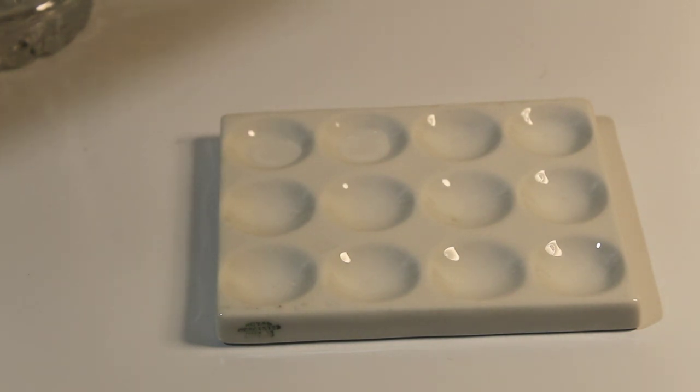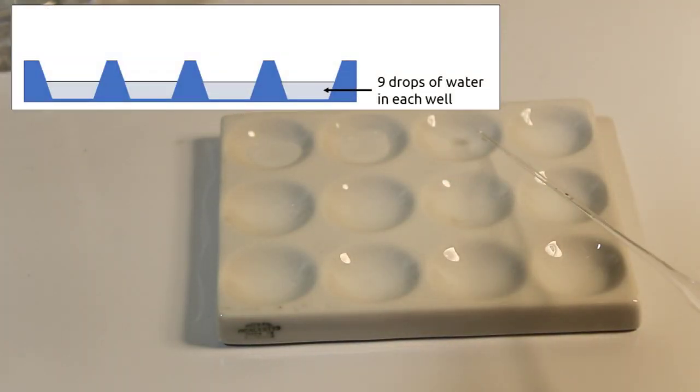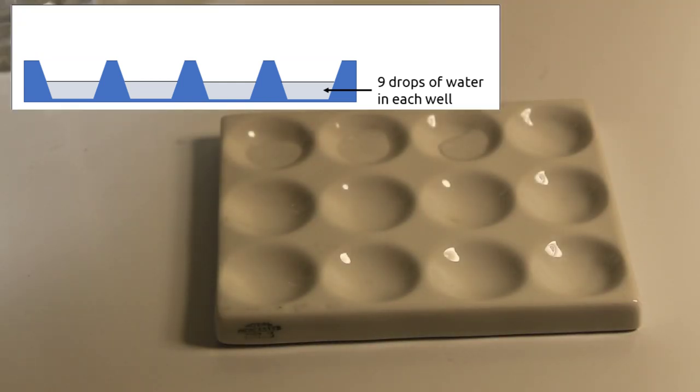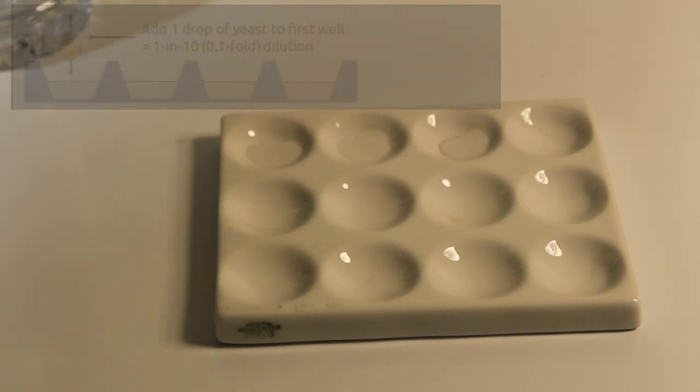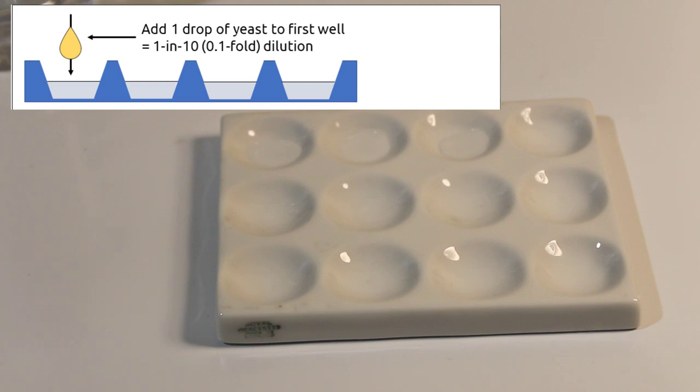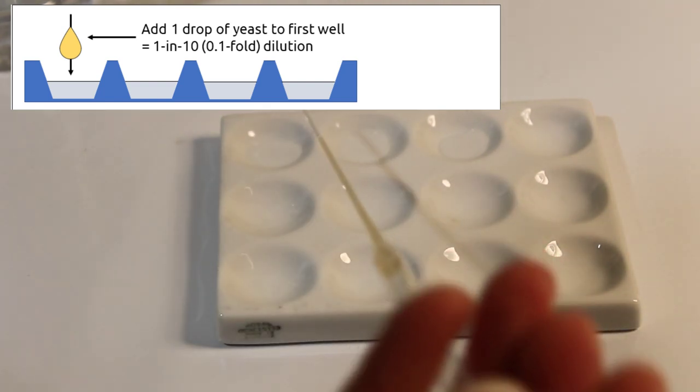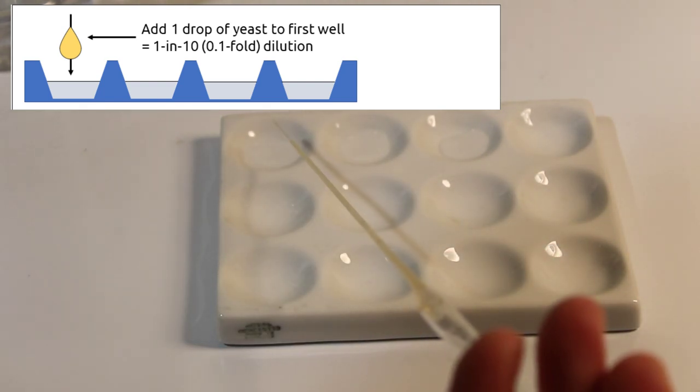What you want to do is, on a spot plate like I have here, or on a ceramic dish, place nine drops of water into one spot, doing your best to use the same size drop every single time. We're then going to take our yeast and place a single droplet of yeast into the first well that I've prepared.